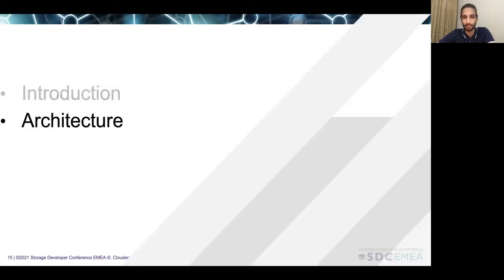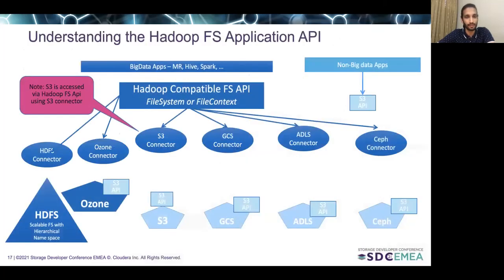Let's dive a bit deeper into the architecture. Most of the big data applications today — like MapReduce, Hive, Spark, Impala — all of them access storage via the Hadoop-compatible file system API. This API is part of the Hadoop project, and the Hadoop community has been very fundamental in making sure that this API is highly adopted and highly scalable.